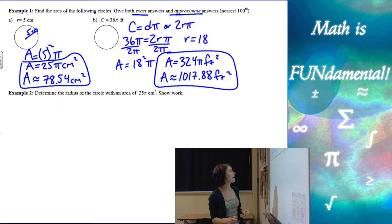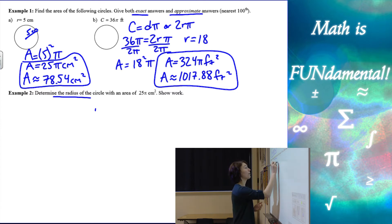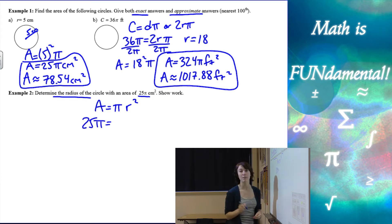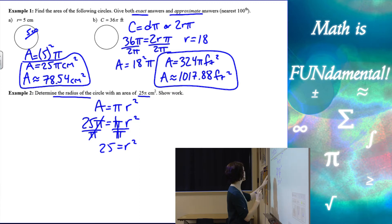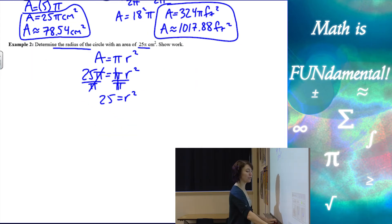Now, this one asks us to find the radius given the area. So now we're going to go backwards. Remember, area is pi times the radius squared. So now what I'm going to do is I'm going to take 25 pi and substitute it for the area in my formula. So now I have 25 pi equals pi times the radius squared. Solving for the radius, I'm going to divide both sides by pi. I get 25 equals the radius squared. And then to find the radius, we would square root both sides of our equation, giving us 5.